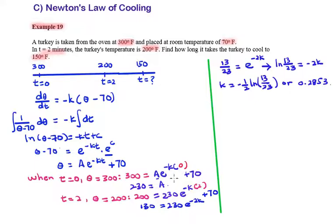Substitute the value of A and K into θ. Therefore, θ is equal to 230 times e to the negative 0.2853T plus 70.